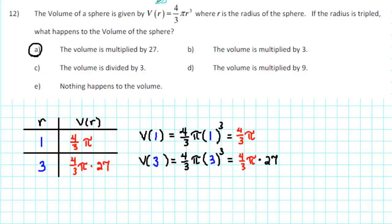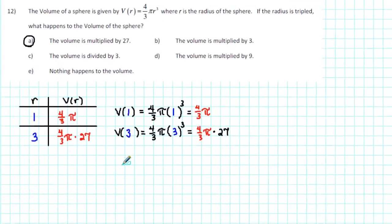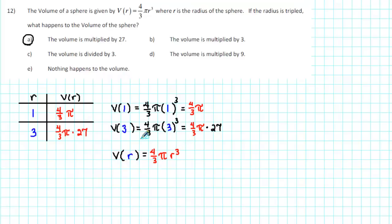To show that this is true in general, we start off with V(r) = (4/3)πr³. This formula tells us that when the radius is r, the volume is (4/3)πr³.